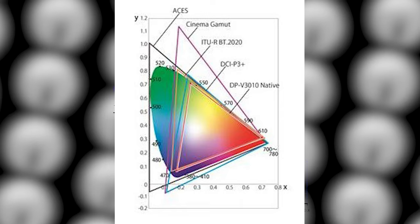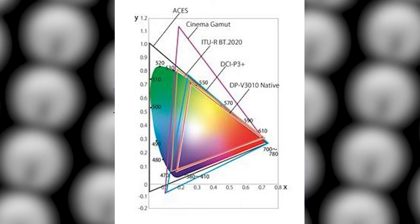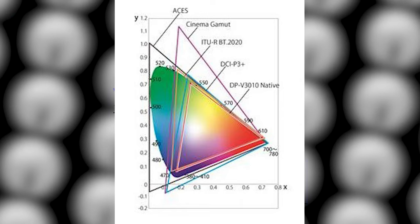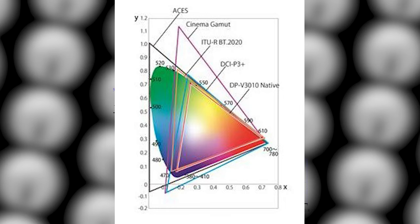In the 2D color space diagram, Cinema Gamut has the biggest area, covering the whole spectrum. Cinema Gamut contains more color information compared to Rec 2020, and even more so than Rec 709. That pretty much wraps up the advantages of shooting in C-Log3. Now, what are the disadvantages?